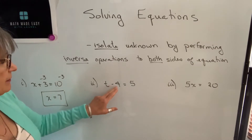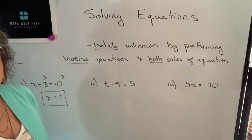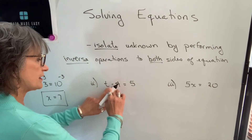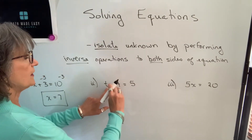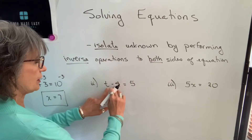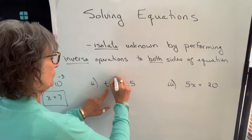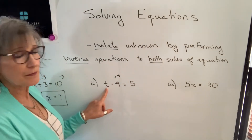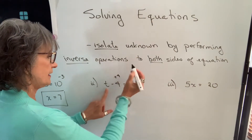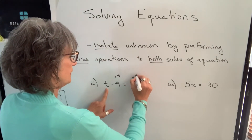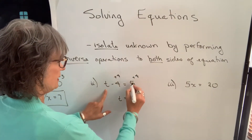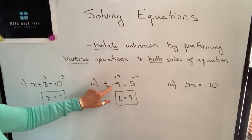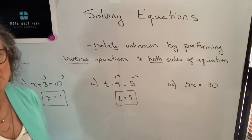The next example: t minus 4 equals 5. If asked to solve for t, we want to get t by itself. There is a 4 being subtracted, so the inverse operation is addition. We add 4 to both sides — the minus 4 plus 4 disappears — and we're left with t equals 9. You can always go back and substitute that value into the original equation to verify it's true.